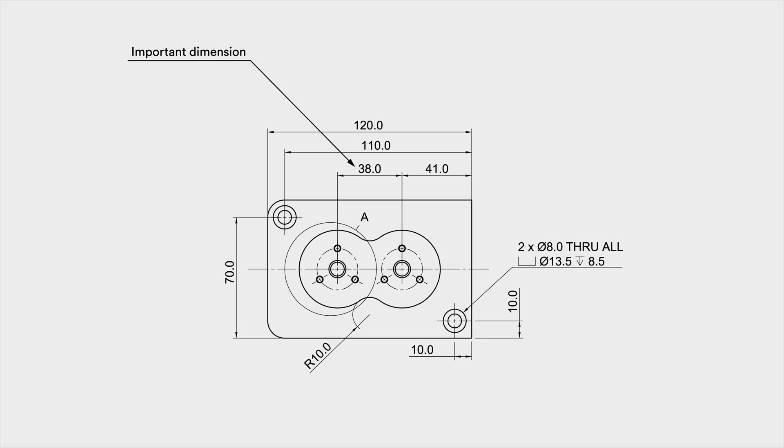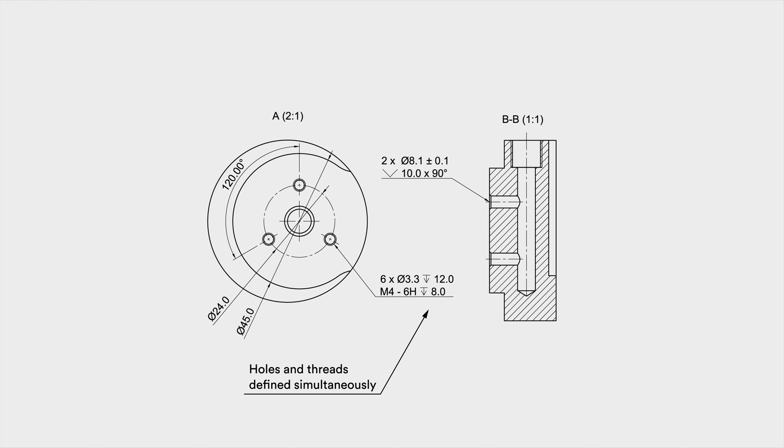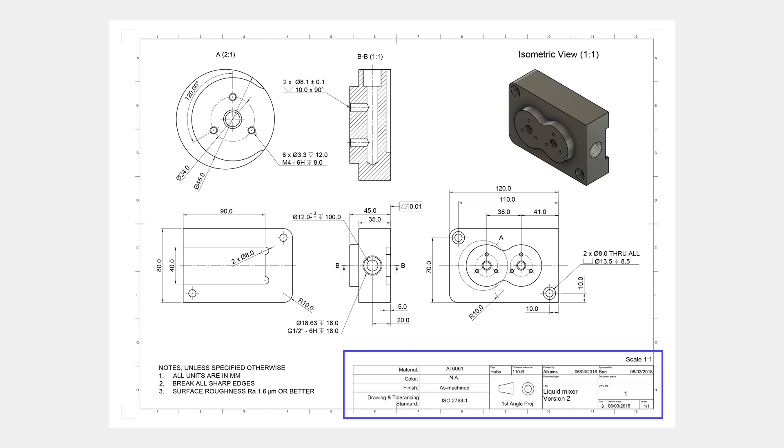Step 4: add dimensions to your CNC drawing, starting with the most important dimensions first. Step 5: specify the location, size, and length of all threads. Step 6: add tolerances to features that need higher accuracy than the standard tolerance. We follow ISO 2768 medium or fine for metals and medium for plastics. Step 7: fill in the title block and make sure that all relevant information and requirements that exceed the standard practices are mentioned in the additional notes.